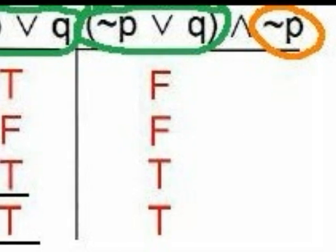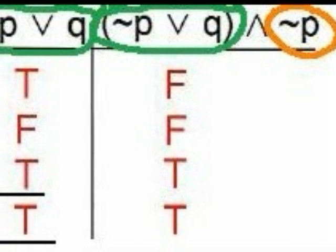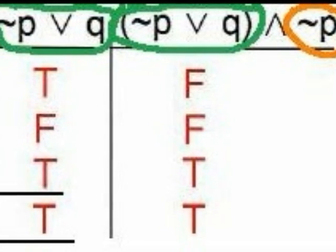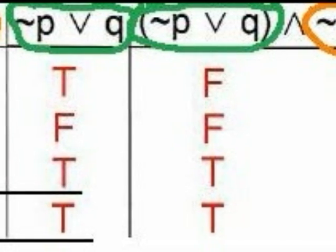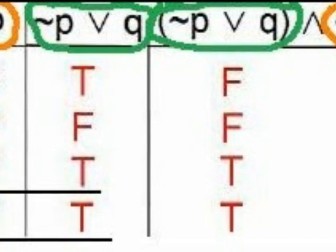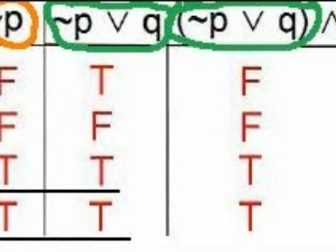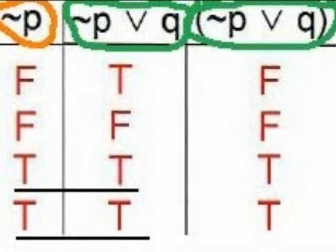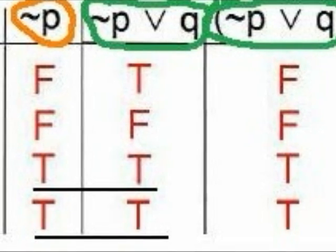In the last column, the AND symbol is used to connect two previous columns. We use the columns headed by the statements on either side of the AND symbol to determine the truth values for the last column. An AND statement is true only when both statements in question are true. So both NOT P and (NOT P or Q) must be true for the entire statement to be true. Therefore, the values in the last column are false, false, true, true — since NOT P and (NOT P or Q) are both true only in lines 3 and 4.